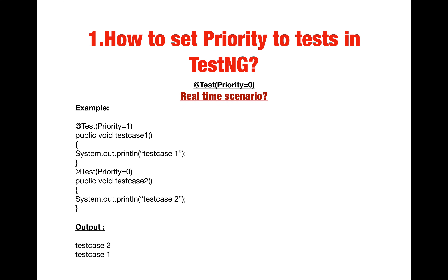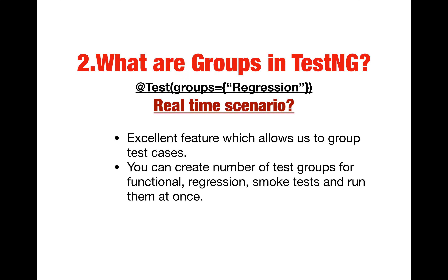Here's a short snippet: I have two tests — test case one with priority equal to one, and test case two with priority equal to zero. When I run this program, test case two will be executed first and test case one next, because of how I set the priority. This way, if you have a large number of test cases, you can define your own order of precedence for execution.